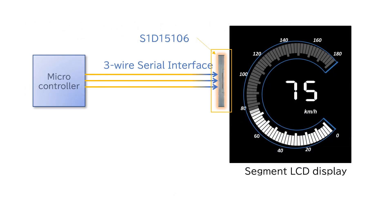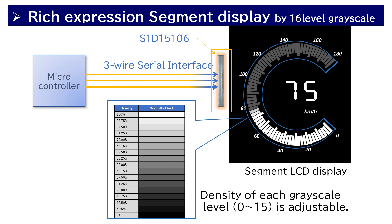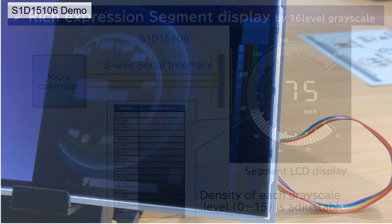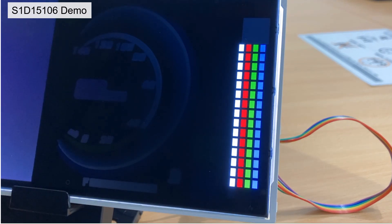Image data transferred from the microcontroller can be displayed on the segment display without an external memory. S1D15106 enables the 16-level grayscale segment display by PWM method. This feature enables segment display with rich expression for speed meter and tachometer. Here is a demonstration of a gradation using the PWM method.